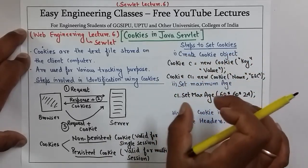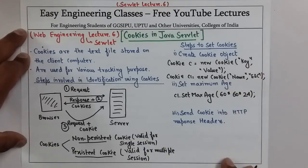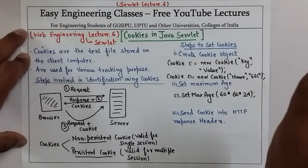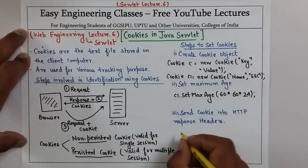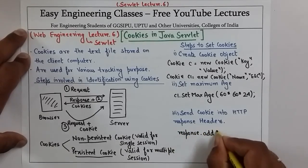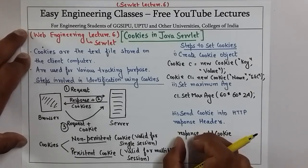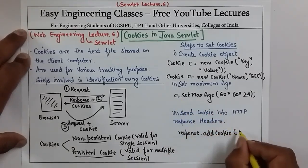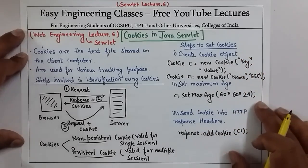Now that you have created a cookie and set its maximum age, the next step is to send the cookie in the HTTP response header so that it can be stored on the client side. For that, you use the response.addCookie method, because in servlets we use the response object to communicate with the client. So you write response.addCookie(c1).